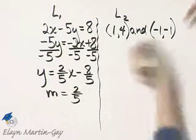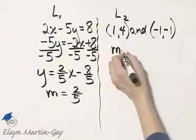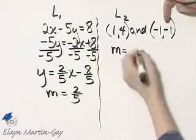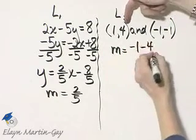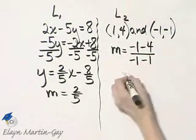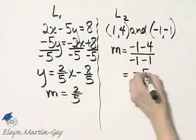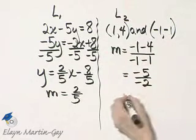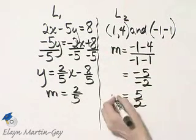Now let's find the slope of the line through these two points. Here we'll use the slope formula. So it's y minus y over x minus x, and that's negative 5 over negative 2. That slope is 5 halves.